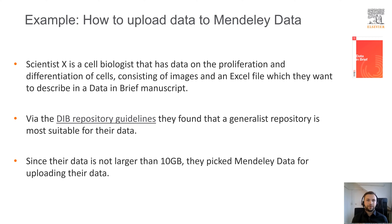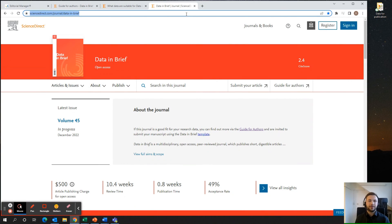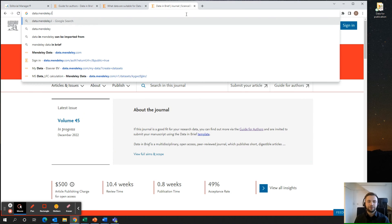Let's take Scientist X as an example. Scientist X is a cell biologist that has data on the proliferation and differentiation of cells, consisting of images and an Excel file which they want to describe in a Data & Brief manuscript. The first action taken by Scientist X is to visit the Data & Brief repository guidelines. Via these guidelines, they found that a generalist repository is most suitable for their data. Since their data is not larger than 10 gigabytes, they pick Mendeley Data for uploading their data. To upload your data on Mendeley Data, go to data.mendeley.com in the browser of your choice.